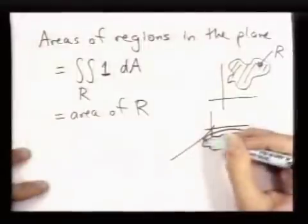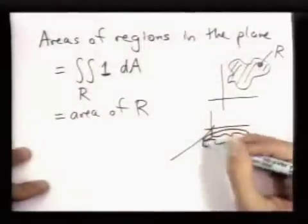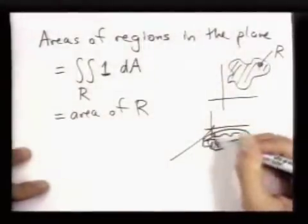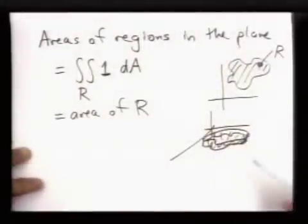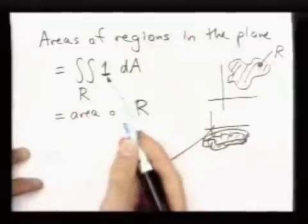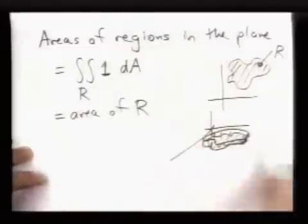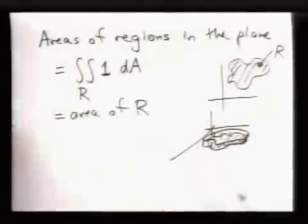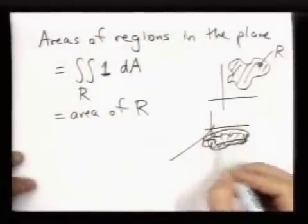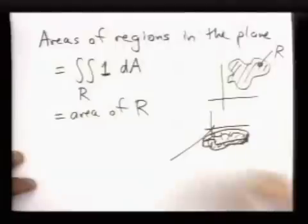And this is computing this volume under it. So it may seem strange to say that the volume under the function equal to 1 over the region gives you an area, but it's just the idea you have all of the cross sections are the same, and your region has a height of 1.